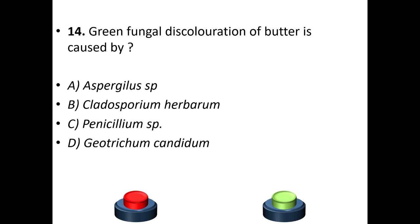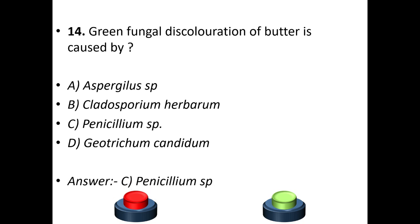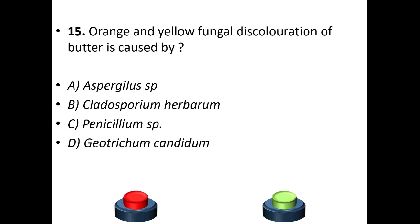Fourteenth question: green fungal discoloration of butter is caused by A: Aspergillus species. B: Cladosporium herbarum. C: Penicillium species. D: Geotrichum candidum. The answer is option C — Penicillium species.